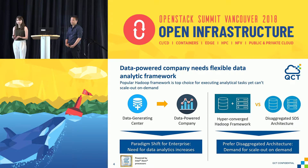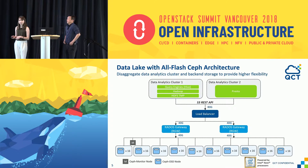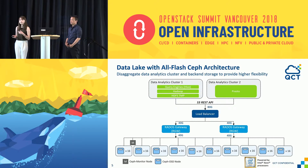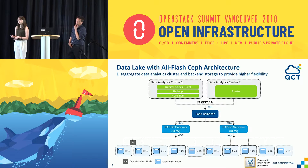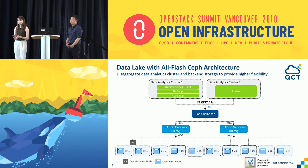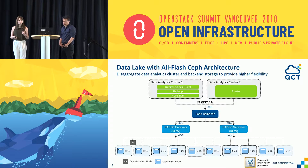To solve this problem, we worked with Intel to design a reference architecture to disaggregate Hadoop and replace it with Ceph as the data lake. This is a real configuration in our lab set up for testing. At the very bottom layer, we have 10 storage nodes. Between the storage nodes and the client nodes, we use the S3 and Rados gateway as the bridge. A load balancer was also set to ensure there's no bottleneck in the traffic.